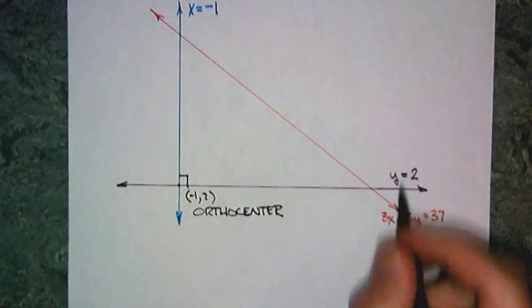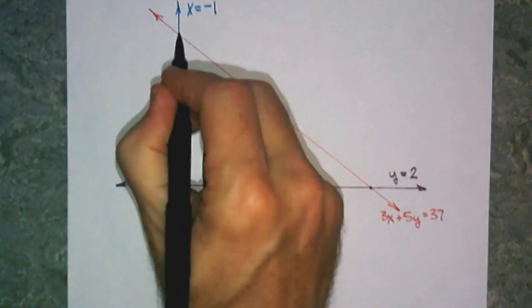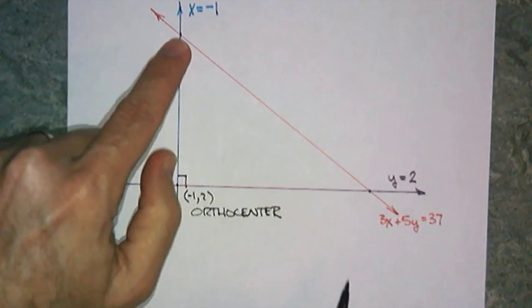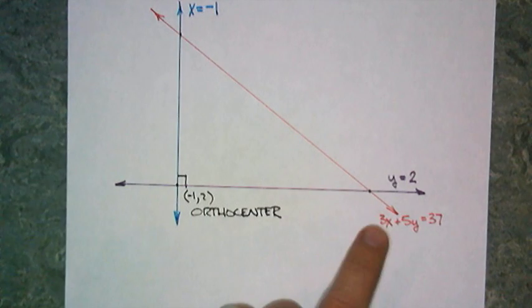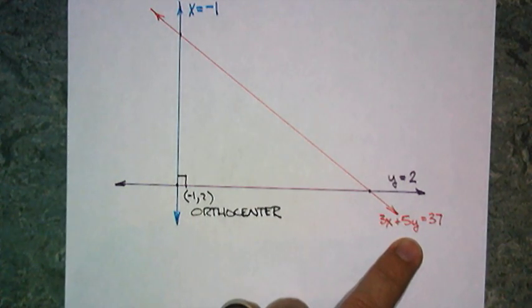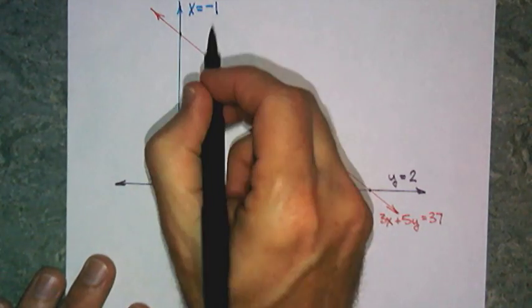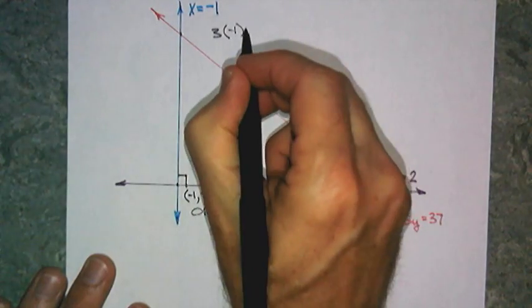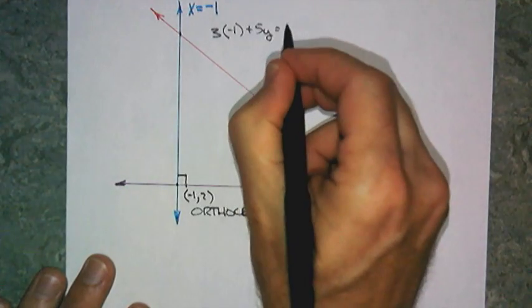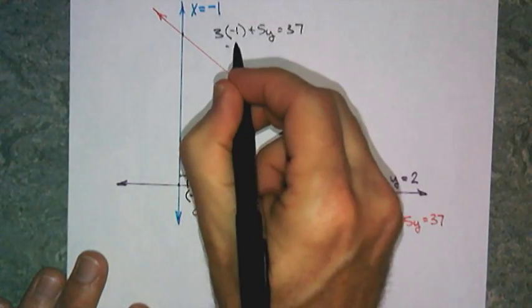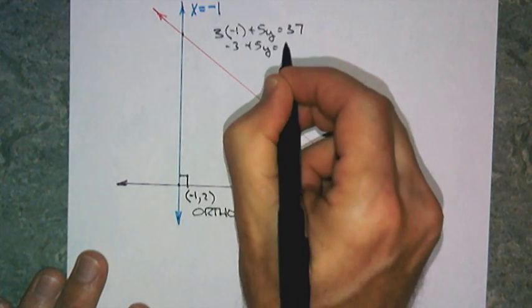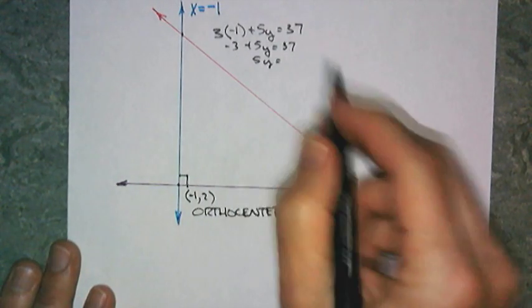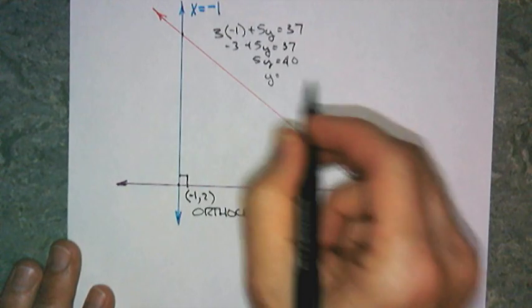I only need one more point. Now, what I need to do now is find these two other intersection points. Let's just start up here. And up here, x equals negative 1, and it intersects with 3x plus 5y equals 37. So, we're going to take that x equals negative 1, plug it in to that x right there. So, that's 3 times negative 1 plus 5y equals 37. Right? That's negative 3 plus 5y equals 37. Add 3 to both sides. 5y equals 40.